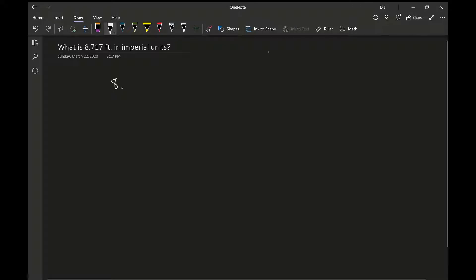So 8.717 feet is equal to 8 feet plus 0.717 feet, and then the question is how many inches is that. So 0.717 feet, and we want to know what that is in inches.